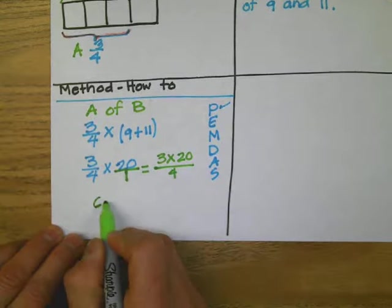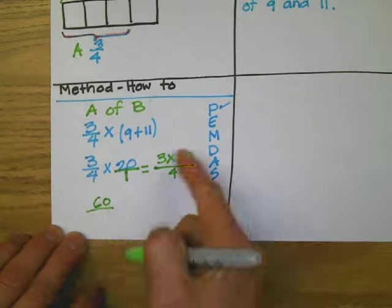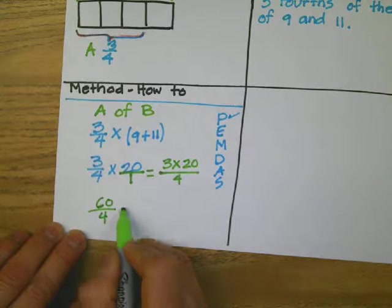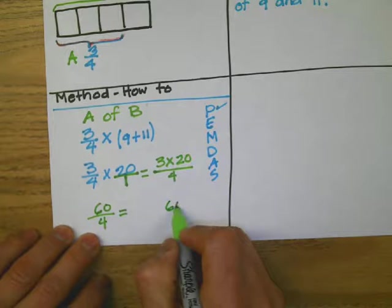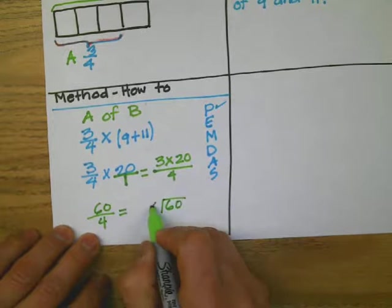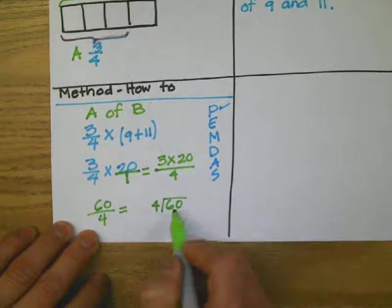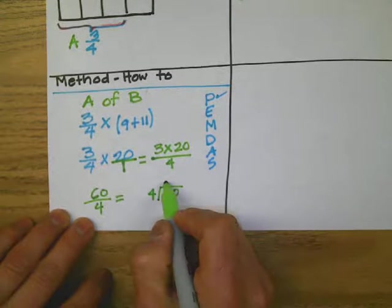And when you do the division, my friends, 60 divided by four. The four can be grouped. Makes one group out of six. One times four equals four. The remainder is two. And we bring the zero.